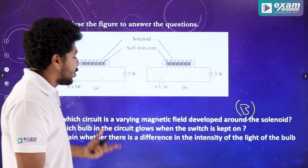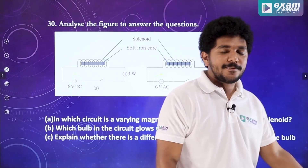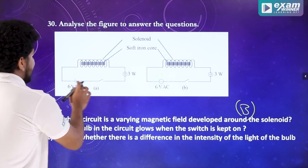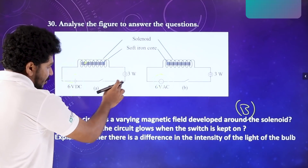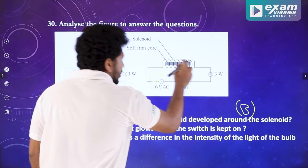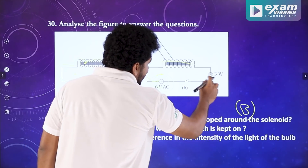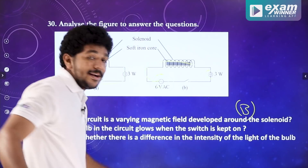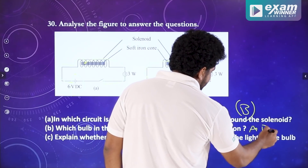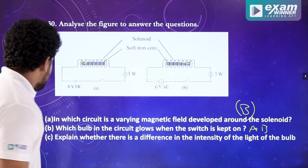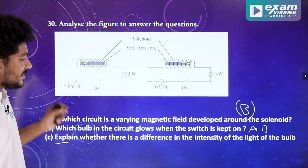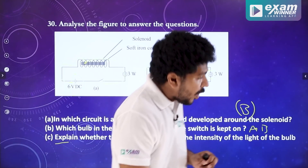Which bulb in the circuit glows when the switch is kept on? Two bulbs are glowing. If the current is switched on, current flows here. The current is also flowing. Four bulbs are glowing in this circuit. There are bulbs A and B — both glow.